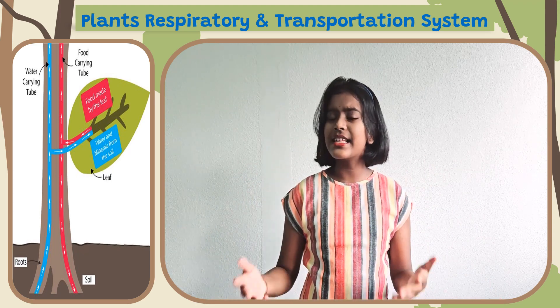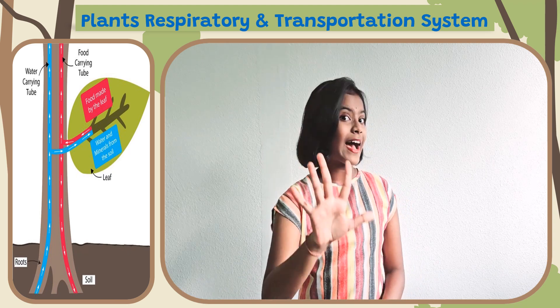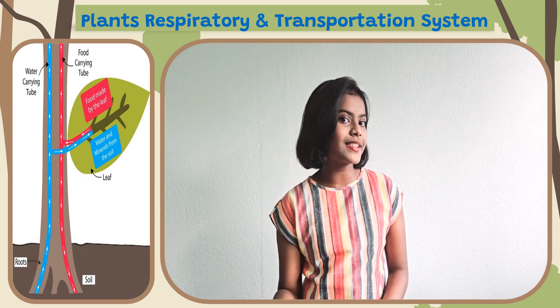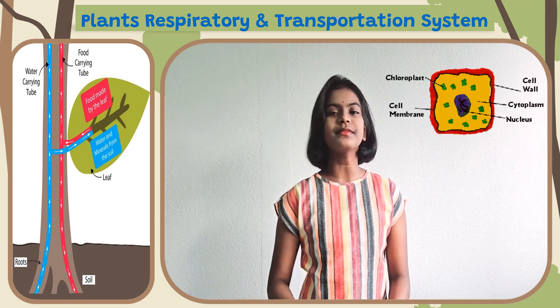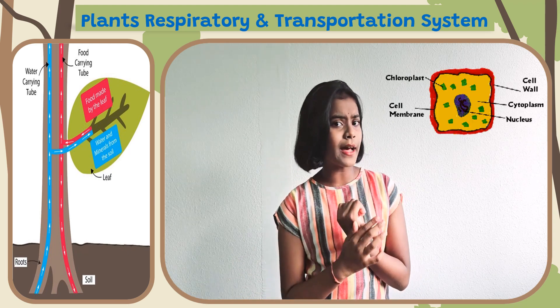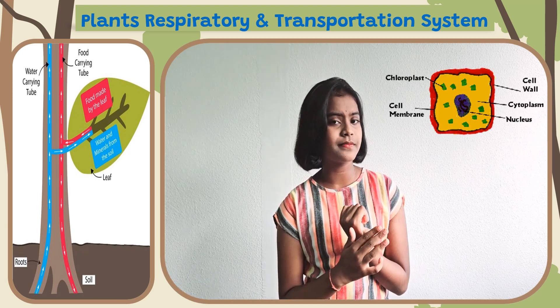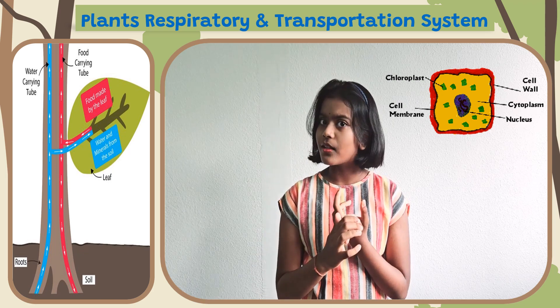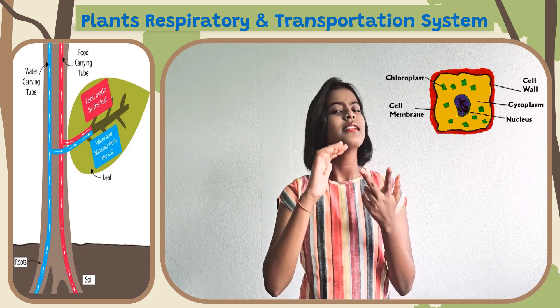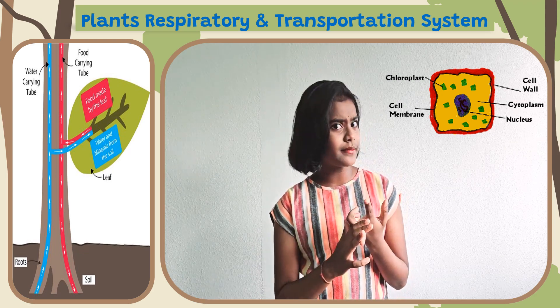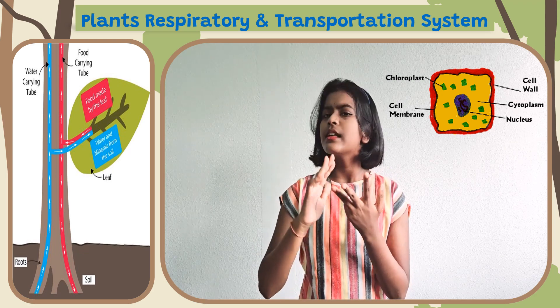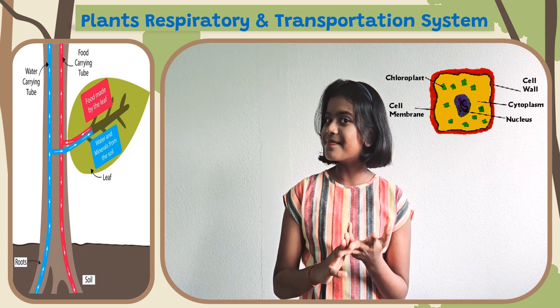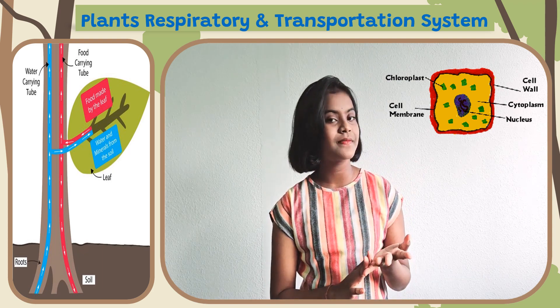A plant cell is made of five different parts: chloroplast, cell wall, cell membrane, cytoplasm, and nucleus.